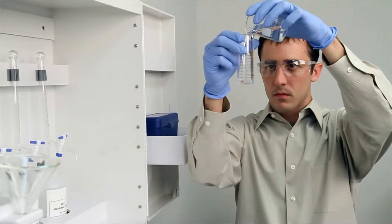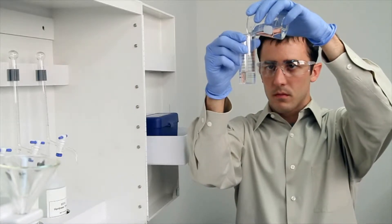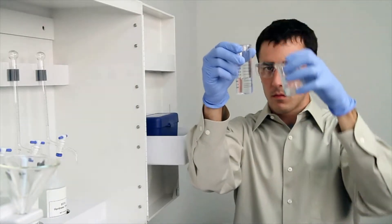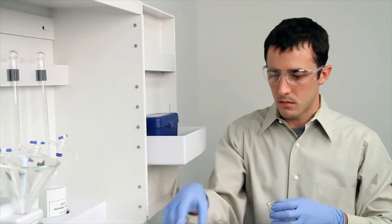To get an accurate sample size, you want to hold the vial close to eye level. Once you feel you have an accurate sample, place the vial on a level surface and bend down to eye level.